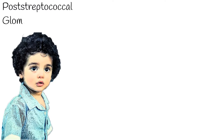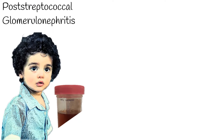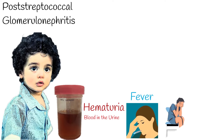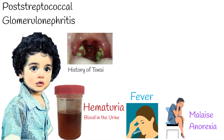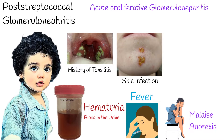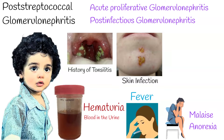A child with blood in the urine, sometimes fever, malaise, and anorexia. The kid has a history of bacterial infection, usually of the pharynx or the skin. This is acute proliferative glomerulonephritis, also called post-streptococcal glomerulonephritis, or post-infectious glomerulonephritis.